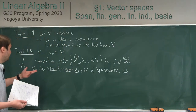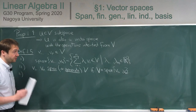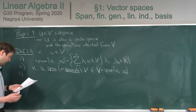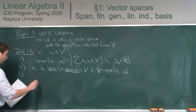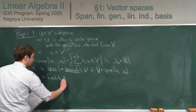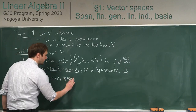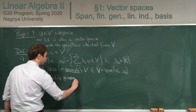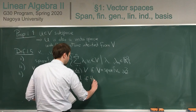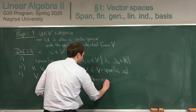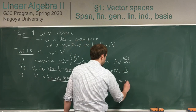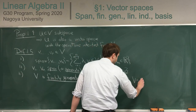If we can span a vector space V by finitely many elements, then we say V is finitely generated. This is a new word, because in Linear Algebra 1 everything was finitely generated. But in this general setup there are spaces which are not finitely generated — for example, the space of all functions from R to R is really big and is not finitely generated. V is finitely generated if there exist v₁ up to vₙ such that V is the span of these.